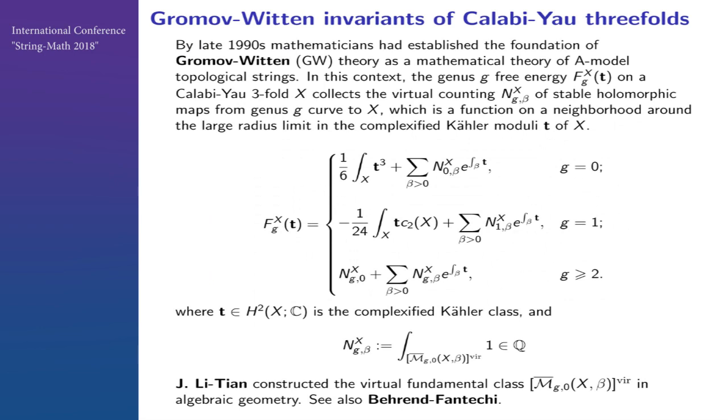At that point, we were interested in counting, now called Gromov-Witten invariants, which is called the A-model of topological string. We're interested in something called free energy defined in this way. For genus equal zero, it has this form corresponding to some counting. For genus equal one, it has this form. Genus bigger or equal to two, it has this form, where this is the integral over the virtual fundamental cycle on the moduli of curves of genus g.